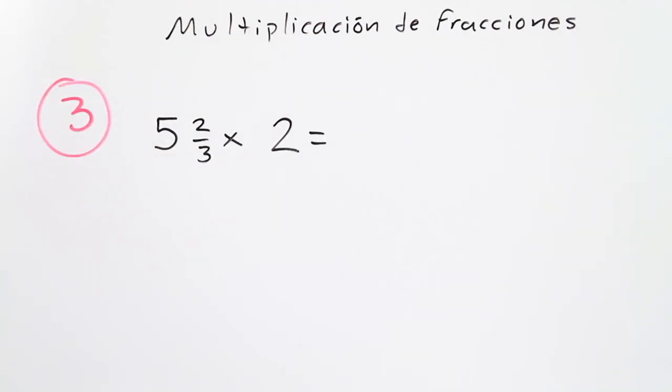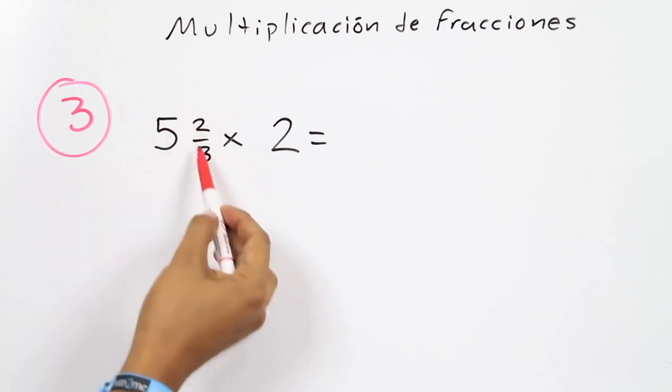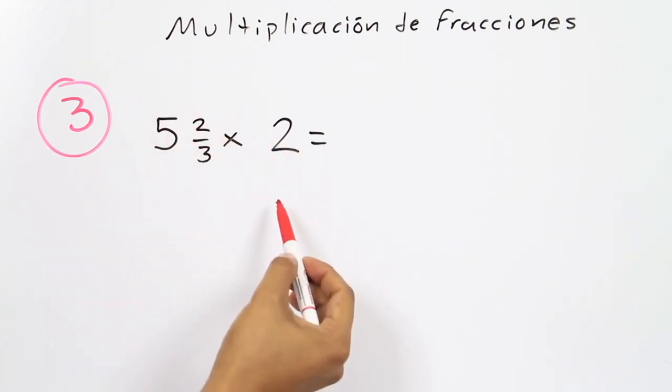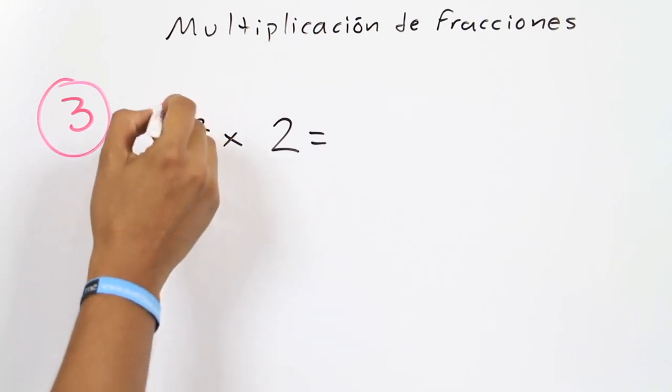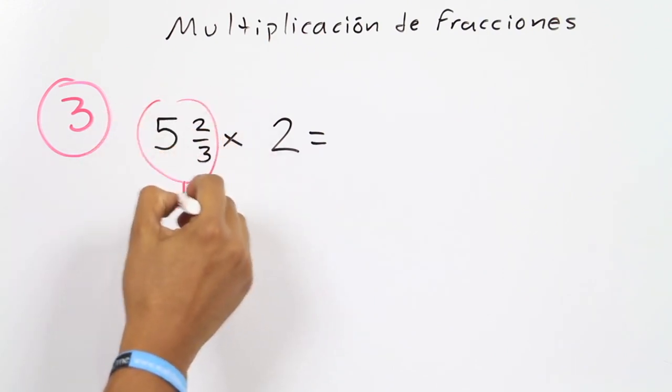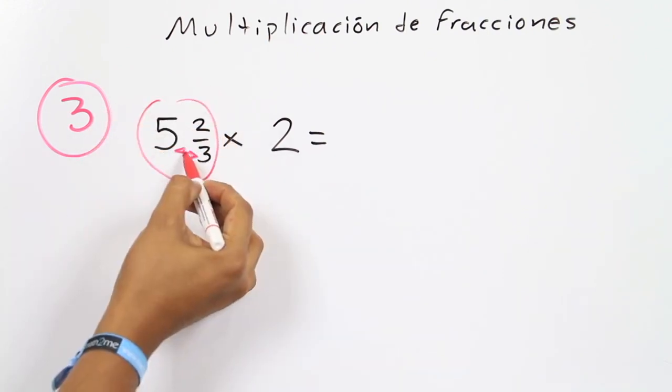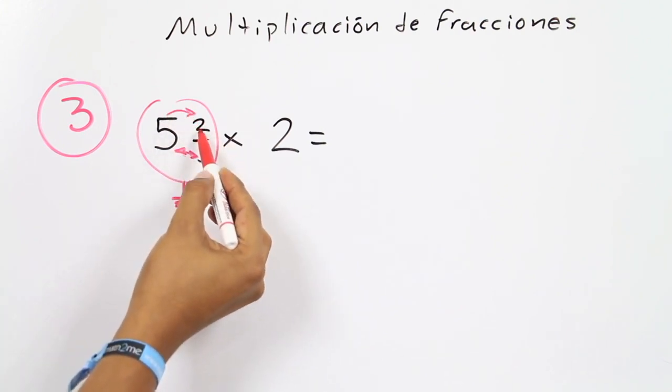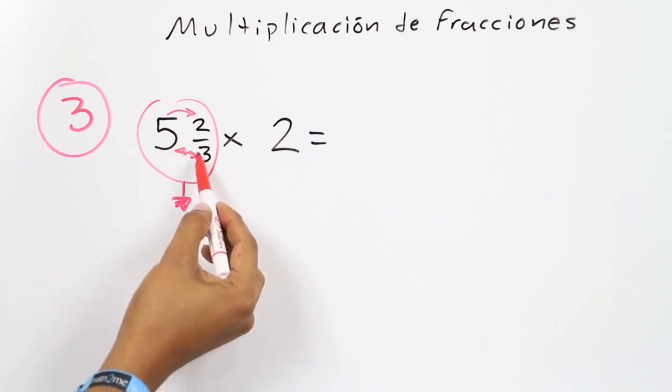Now if we have to solve a multiplication with a mixed fraction by a whole number, it is recommended to change them to an improper fraction. To do this, just multiply the denominator by the whole number, then add everything to the numerator, and keep the same denominator.